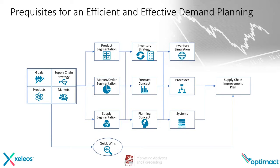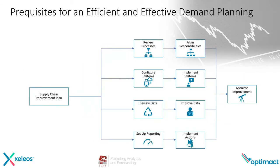Based on that, you have the possibility to create a supply chain improvement plan, which is then the basis during implementation of the demand planning process or forecasting tools. First, you have to review your processes. Based on that, you align on responsibilities. You configure your systems, implement, review data, improve data, and set up reporting and implement all actions. And if you have done that, you have to monitor all the improvements.